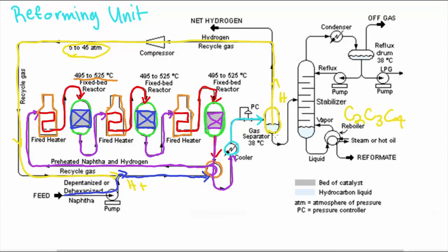The BTX then goes to a stabilizer where off gases such as ethane, methane, and butane are extracted from the system.